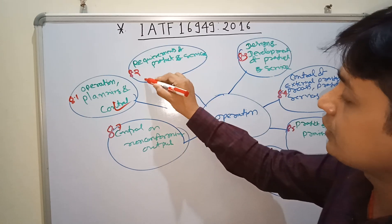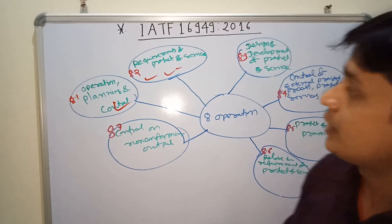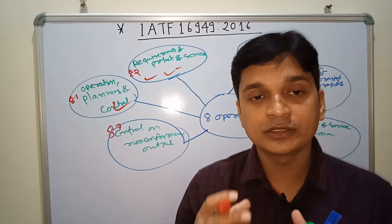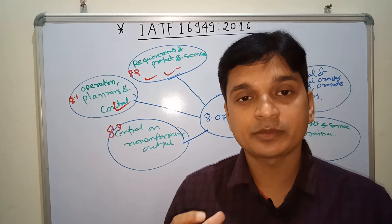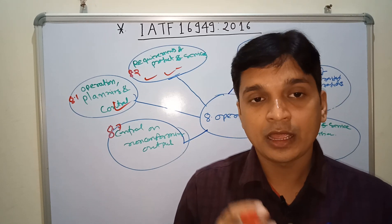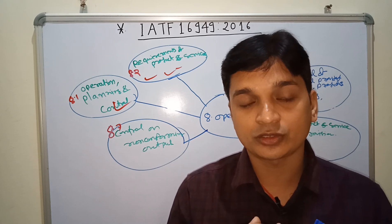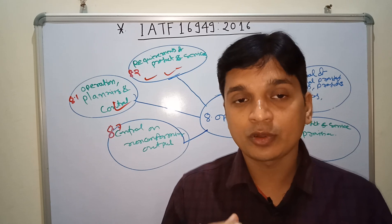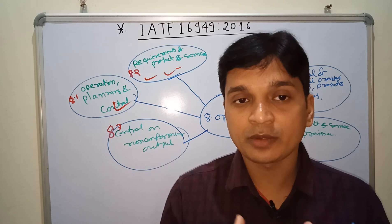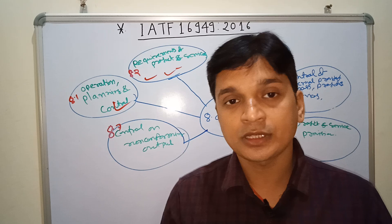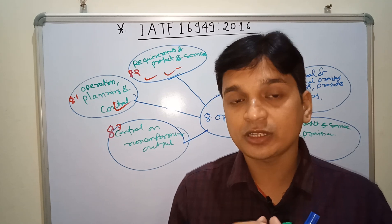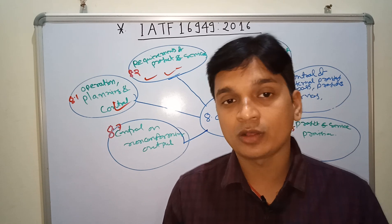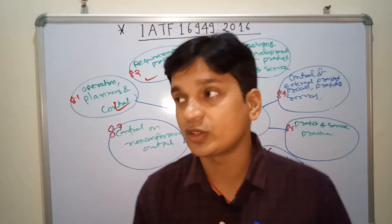Sub-clause 8.2 covers Requirements of Product and Service. This clause basically includes the requirement of communication — what is the communication between customer and suppliers. If your customer is outside India, whether in Germany, Spain, or the USA, you must define the communication process depending on the customer requirement. That is very important in this clause.